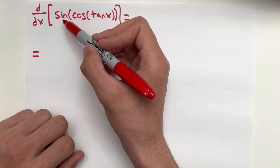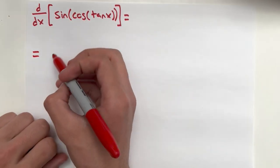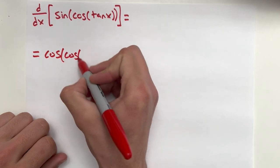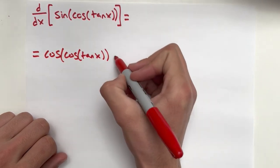Alright, so the derivative of sine, we all know, is cosine. So this is going to be cosine, cosine, tangent x times.